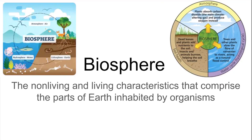The biosphere intersects with all of the other spheres and cycles that we've been discussing this year. It intersects with the geosphere because plants need soil to survive, and with the hydrosphere because plants need water in order to undergo photosynthesis. Every organism uses the atmosphere — we need oxygen to conduct cellular respiration.